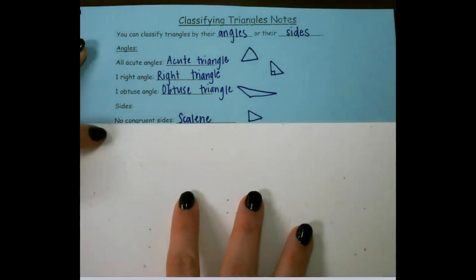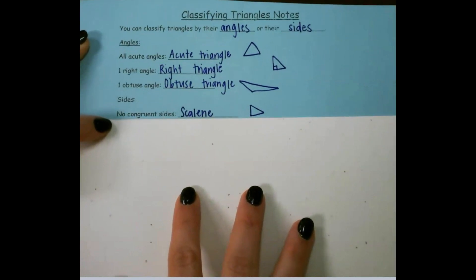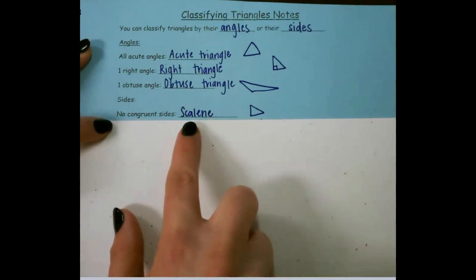For its sides, if there are no congruent sides, which means no equal sides, it would be scalene.